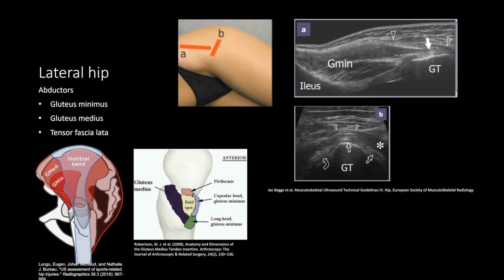For the lateral hip, lay the patient on their side. Use the tensor fascia latae as a landmark and move the probe down to the greater trochanter. The gluteus minimus tendon is at the anterior facet of the greater trochanter. The gluteus medius is at the lateral facet, and just superficial to the posterior facet is the greater trochanteric bursa, which is usually not filled with fluid in normal conditions.